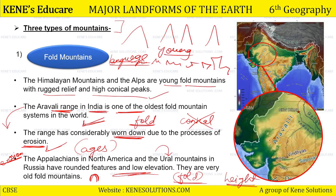Especially Ural mountain toh itna important hai ki voh Europe ke continent ko Asia ke continent se separate karta hai — isliye bhi yeh mountains bahut important hote hain. Aapko yeh naam yaad hone chahiye — ki Himalayas, Aravallis, Appalachians aur Ural mountains — yeh sab fold mountains hain. Duniya ke famous old fold mountains hain.